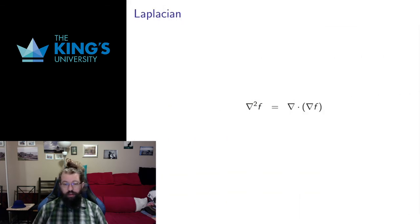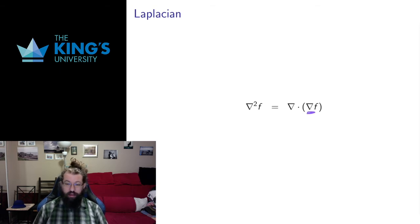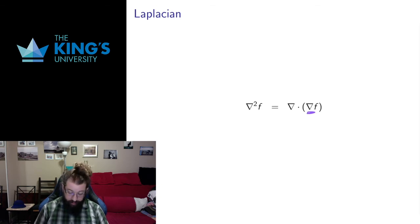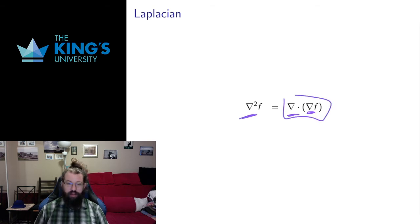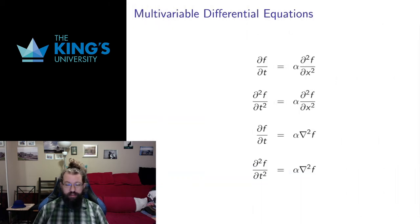I want to mention one more operator: the Laplacian of a scalar field. If I have a scalar field, its gradient is a vector field — the vector of partial derivatives. I can then take the divergence of that gradient. The divergence of the gradient is what I call the Laplacian. If a scalar field has zero Laplacian, it's called a harmonic scalar field.